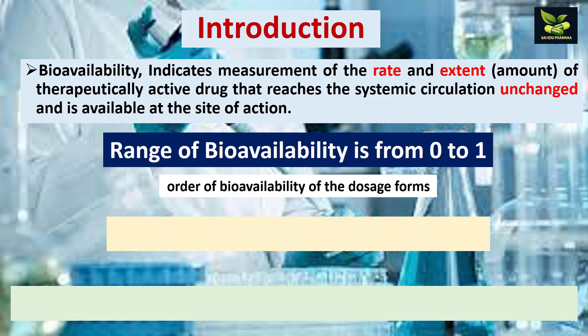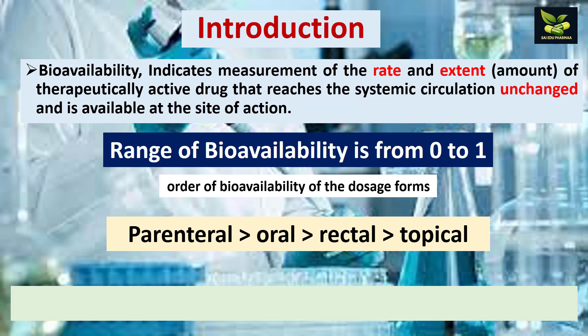The range of bioavailability is taken from 0 to 1. If it is 1, it means 100% absorption is there. Generally for the intravenous route we consider it as 1. The order of bioavailability of dosage forms is: 100% for intravenous (parenteral), then oral, then rectal, then topical. You have to remember this sequence.